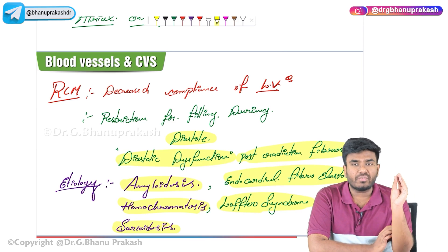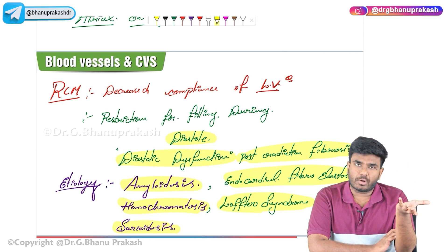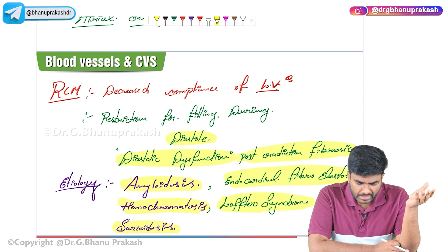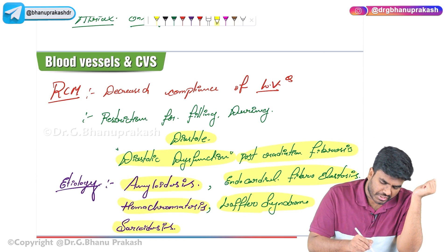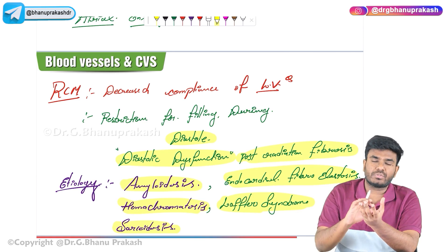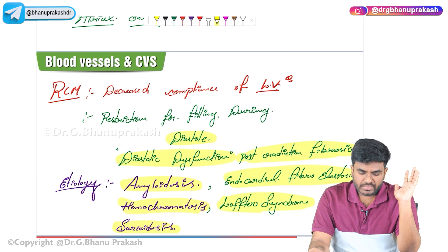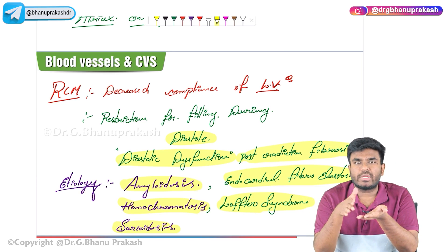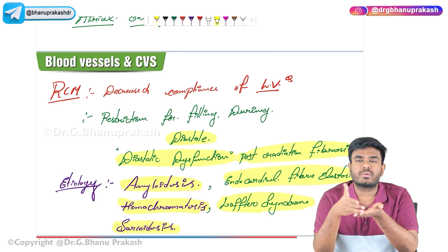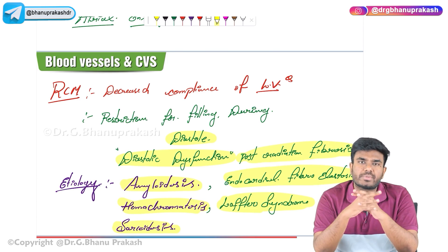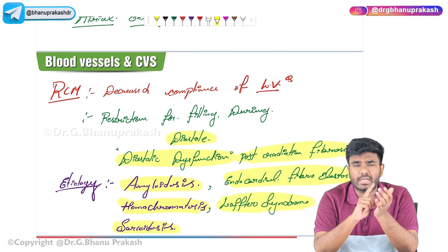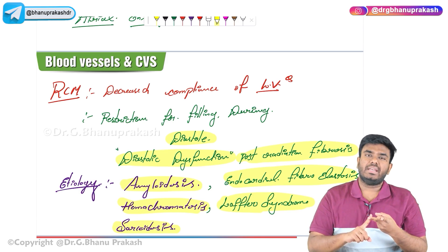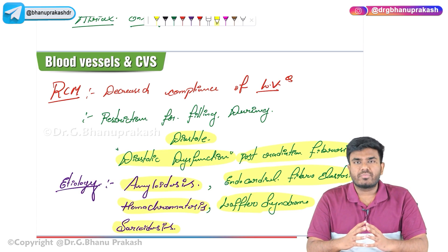The ventricles are not relaxing properly — not just the left ventricle but also the right ventricle, which is commonly affected. On biopsy, there will be too much fibrosis deposition along with the cardiomyocytes. With this, we have completed dilated cardiomyopathy, restrictive cardiomyopathy, and together with the previous video, hypertrophic cardiomyopathy as well. Hope the video is helpful, thank you.